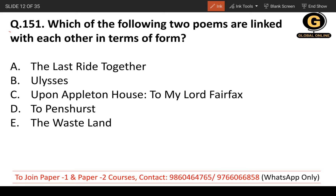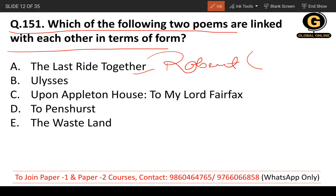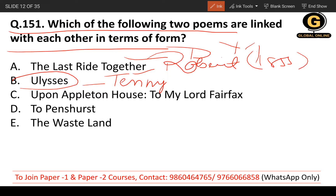Question 151: Which of the following two poems are linked in terms of form? 'The Last Ride Together' is a dramatic monologue by Robert Browning, published in 1855. 'The Nalicious' (Ulysses by Tennyson) is also an example of dramatic monologue. These two share the same poetic form.